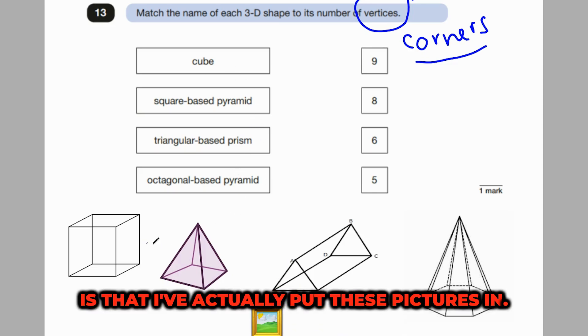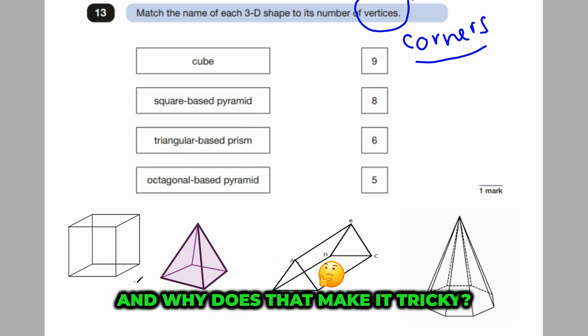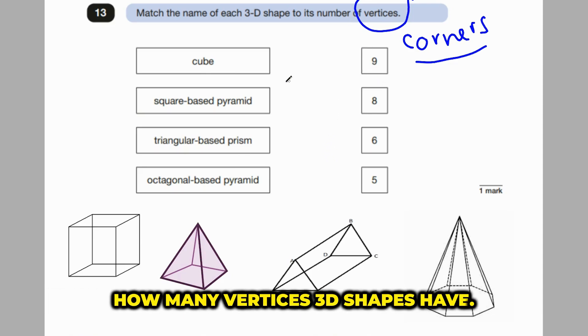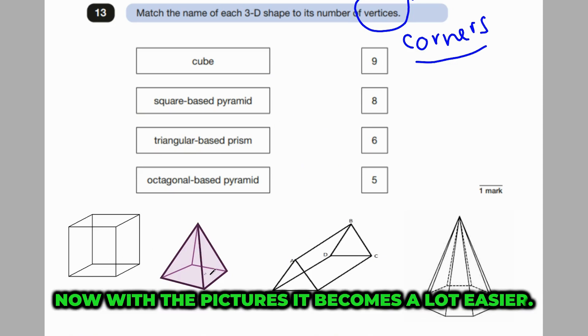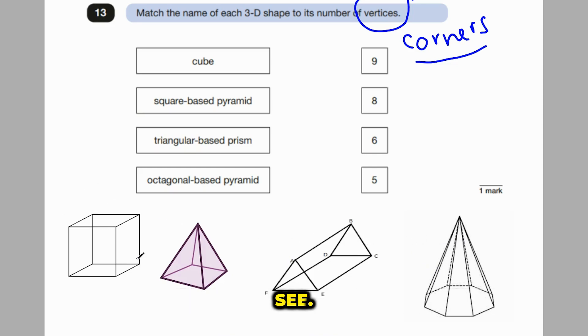The other thing is, is that I've actually put these pictures in. These won't be given on the actual paper. And why does that make it tricky? It's because you kind of have to have remembered how many vertices 3D shapes have, or you kind of have to visualize it in your mind. Now, with the pictures, it becomes a lot easier. But I've added these in so you can see.